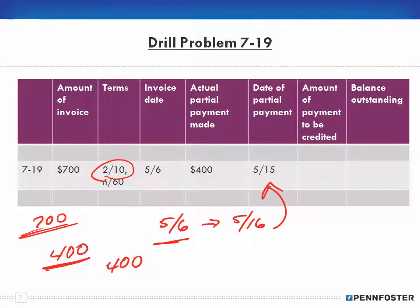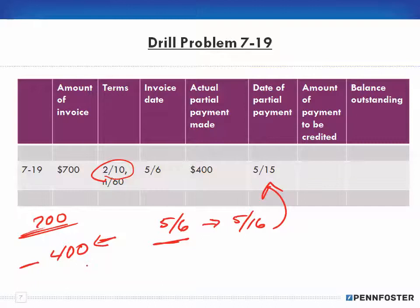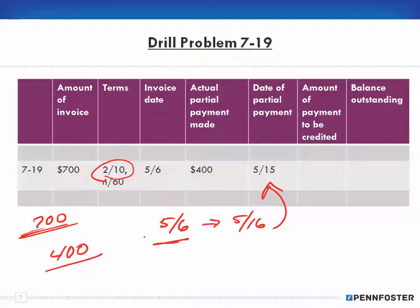Wait — actually, we can't just take 2% of $400, because that treats this like a list price discount. If I'm paying $400, I'm expecting to get more than $400 credited back. So to determine that amount, I take my $400 and divide it by the complement of 2%, which is 98%. Taking 400 divided by 0.98 gives me $408.16.